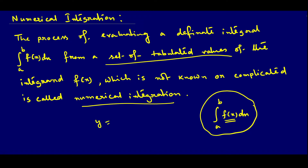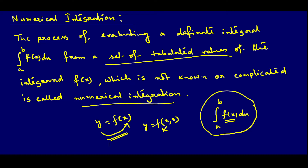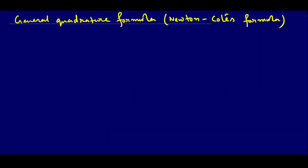If y is a function of x — a single variable — where y is the dependent variable and x is the independent variable, then the process of finding this integration is called quadrature. Based on that, we will derive the general quadrature formula, also called the Newton-Cotes formula.